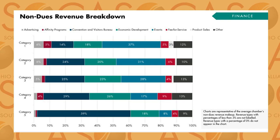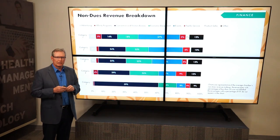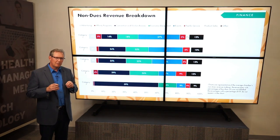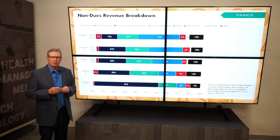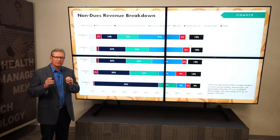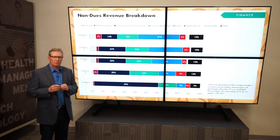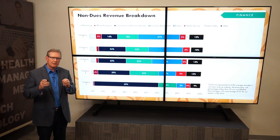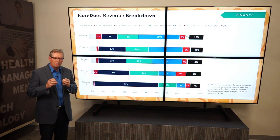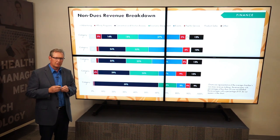The data does not tell us the nature of those relationships. It's likely that the chamber is administering those organizations or being compensated for providing services in some way. Understanding revenue composition within the chamber industry can help you assess your chamber's current position and help you make better decisions about the direction your chamber should go.